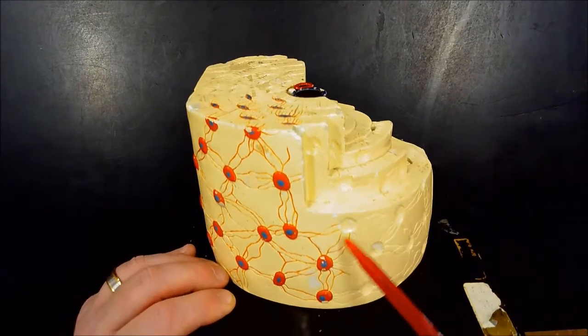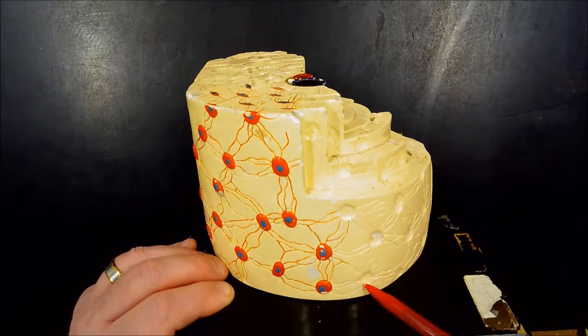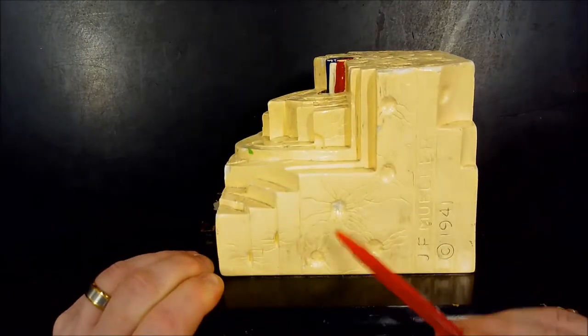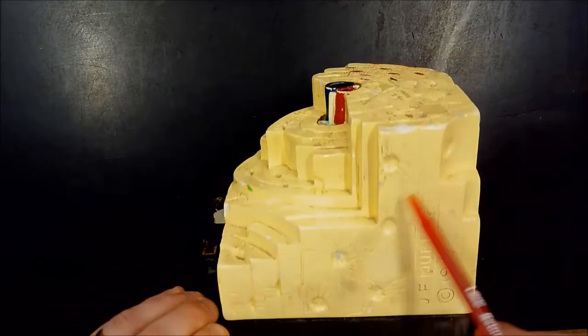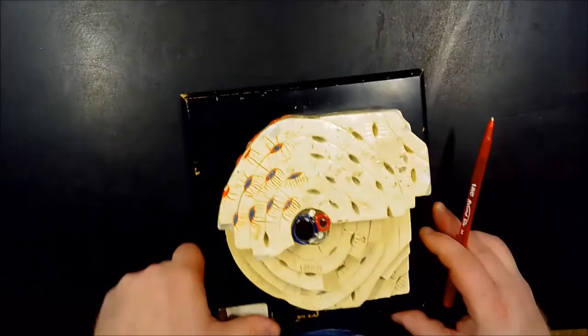All these red lines are going to be the canaliculi. Over here they're just not showing the osteocytes in the lacunae. Again, lacunae and here's all the rays that go out which are the canaliculi.